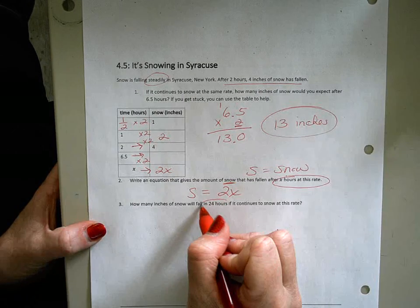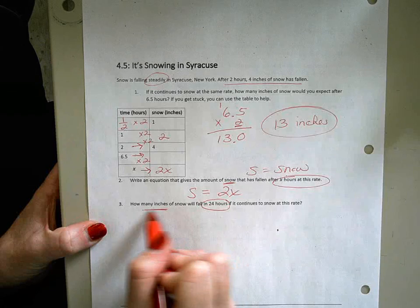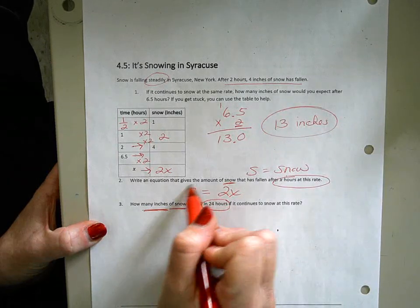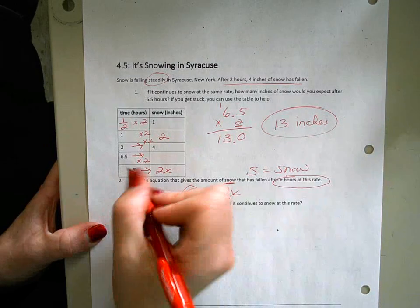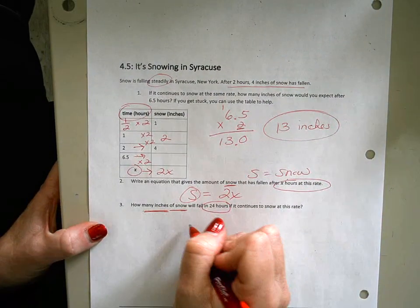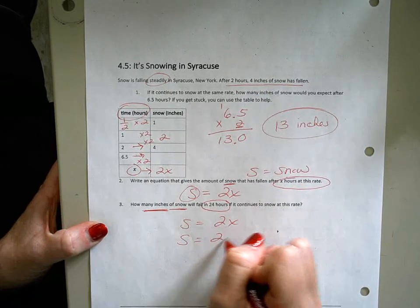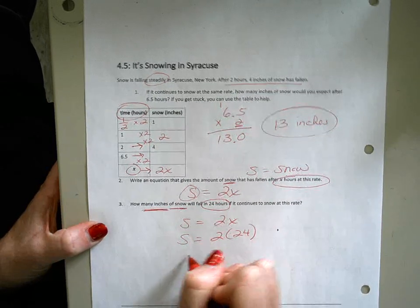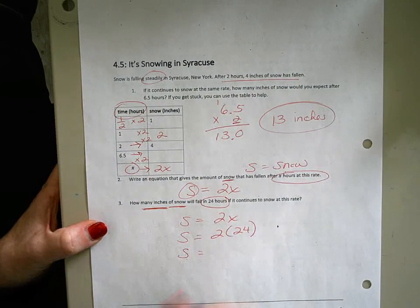We're trying to find inches of snow. I'm trying to find s, which means the 24 I'm going to substitute in for x, which is my time. So s equals 2x, which means my snow is 2 times 24, which means if it snowed at that rate for 24 hours we would have 48 inches of snow, or four feet.